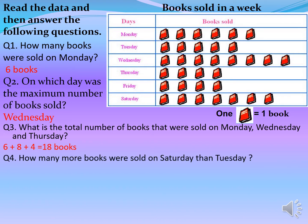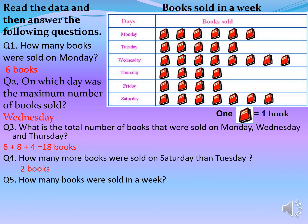How many more books were sold on Saturday than Tuesday? Since we are comparing these two days, we do subtraction. Saturday had seven books and Tuesday had five books, so seven minus five equals two books. How many books were sold in a week? Adding all days: six (Monday) + five (Tuesday) + eight (Wednesday) + four (Thursday) + four (Friday) + seven (Saturday) equals 34 books. So thirty-four books were sold in a week.